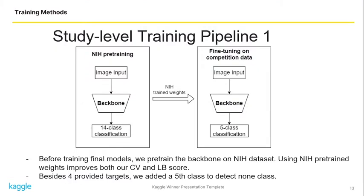For study level we have two pipelines. For pipeline 1, we pretrain our backbone with the NIH dataset and then fine-tune our pretrained model on the competition data. By applying this pretrained model we can improve our CV score and leaderboard score significantly.